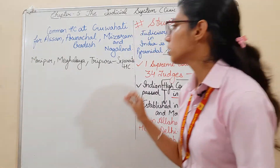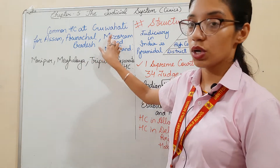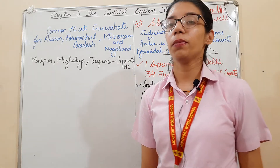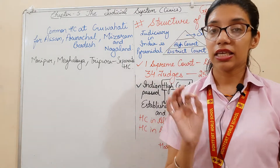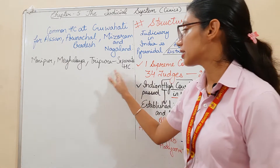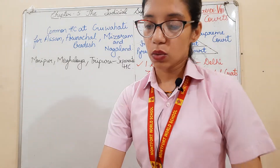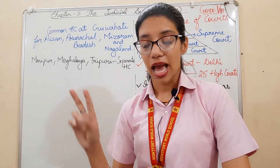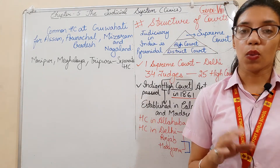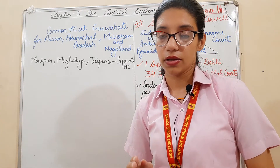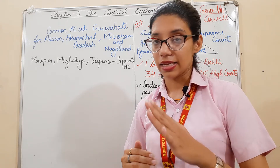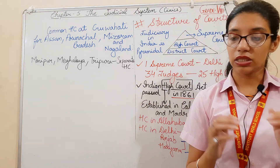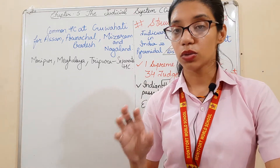Assam, Arunachal Pradesh, Mizoram, and Nagaland share a common High Court located in Guwahati. Manipur, Meghalaya, and Tripura each have a separate High Court. In 2000, three High Courts were established in Bilaspur, Nainital, and Ranchi with jurisdiction over Chhattisgarh, Uttarakhand, and Jharkhand respectively.